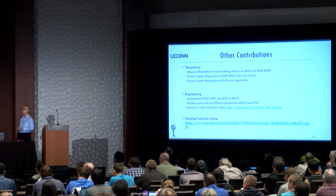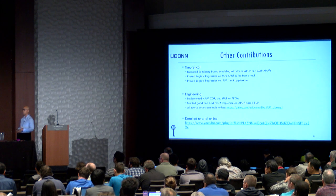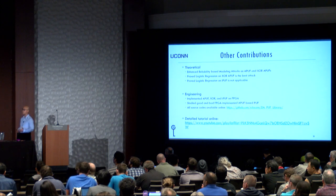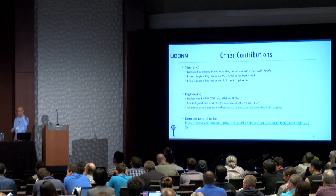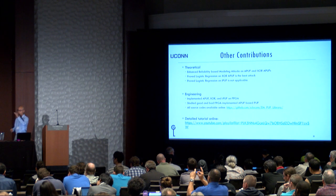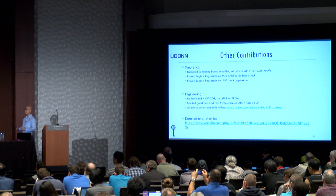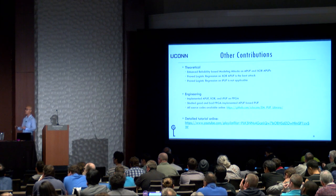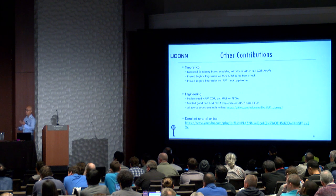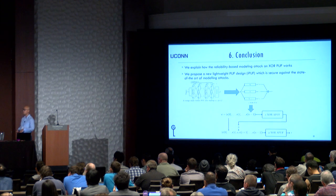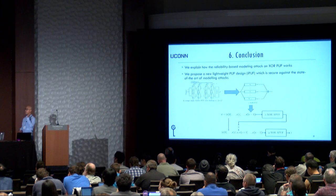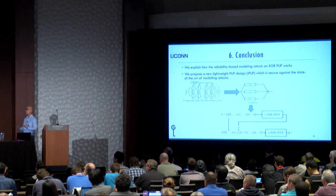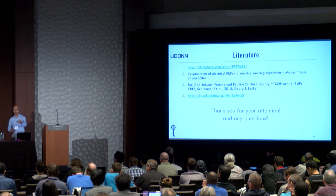In our paper, we have many other contributions. We propose an enhanced Becker attack. We prove that the logistic regression modeling attack on Arbiter PUF is the best classical attack, and it is not applicable to I-PUF. This implies we may be able to use fewer Arbiter PUF instances in I-PUF than currently proposed. We publish FPGA implementation code for the Arbiter PUF, XOR Arbiter PUF, and I-PUF, as well as the attack algorithms and a detailed tutorial online. In conclusion, we understand how the Becker attack works, and we propose a new lightweight PUF design that is secure against state-of-the-art modeling attacks. Thank you for your attention. We are open for questions.